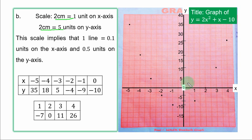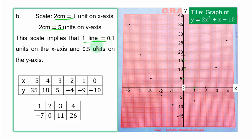For Part C(i): solve 2x² + x - 10 = 0. This is equivalent to 2x² + x - 10 = 0, i.e., y = 0. The solution occurs where the curve cuts the x-axis. One point is at x ≈ 2, and another at approximately x = -2.5. So the solutions are x = 2 and x = -2.5.